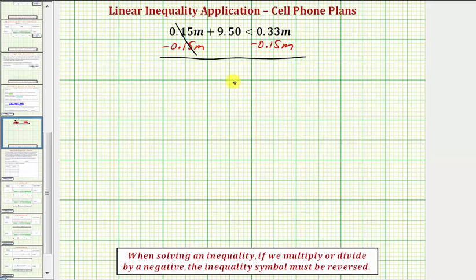Notice now on the left side this is zero, so we have 9.50 is less than 0.33M minus 0.15M, which is equal to 0.18M.